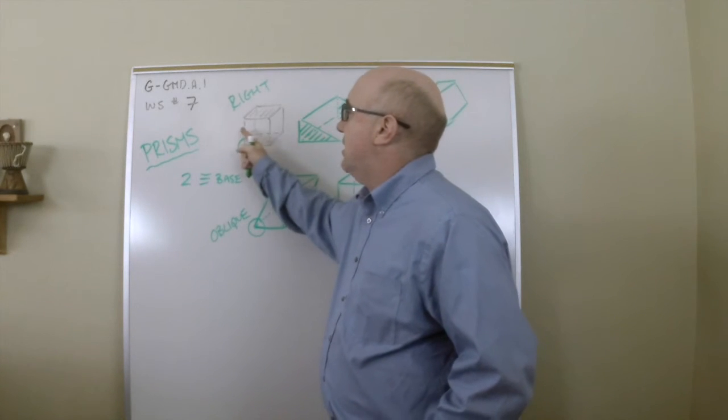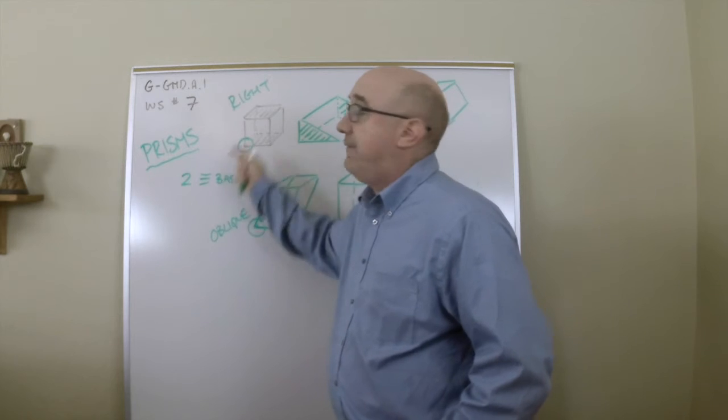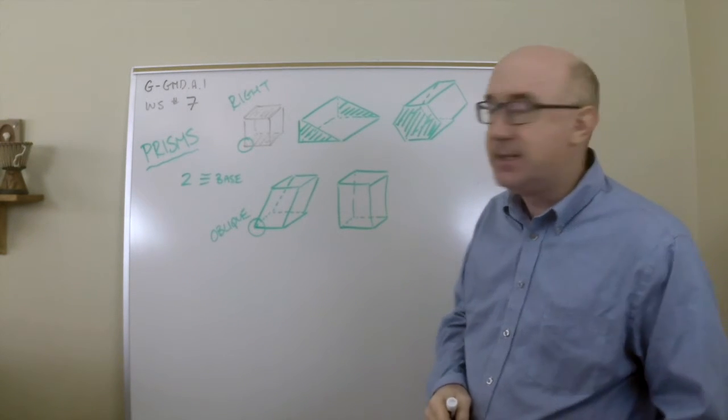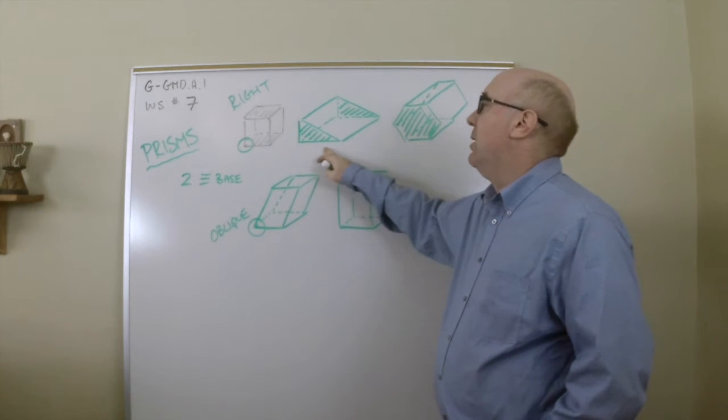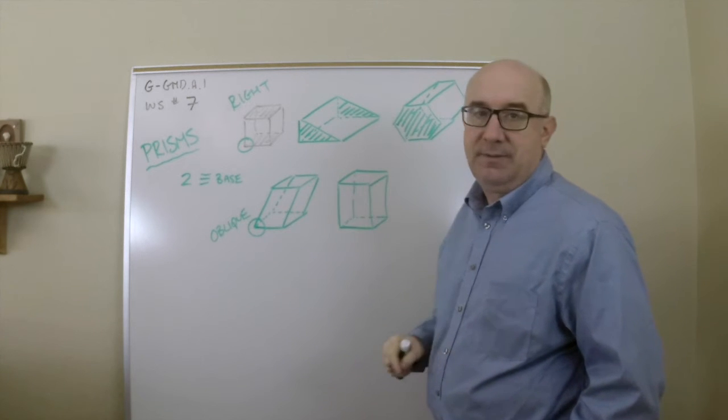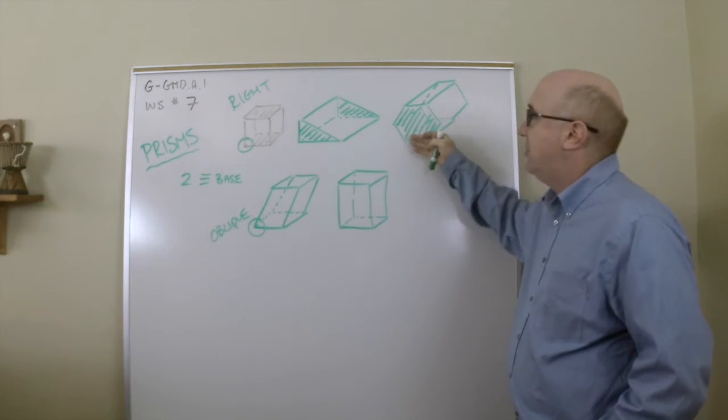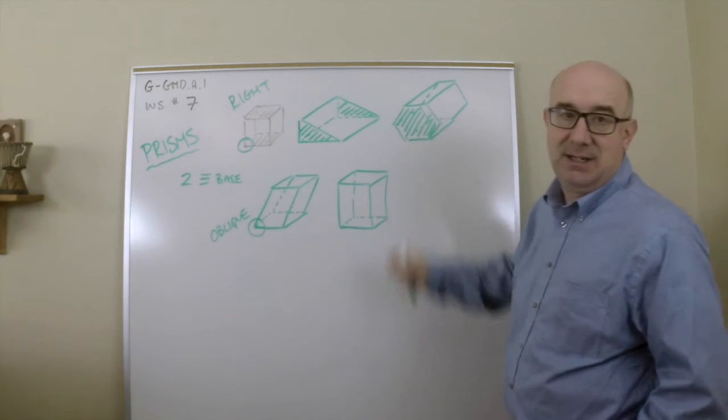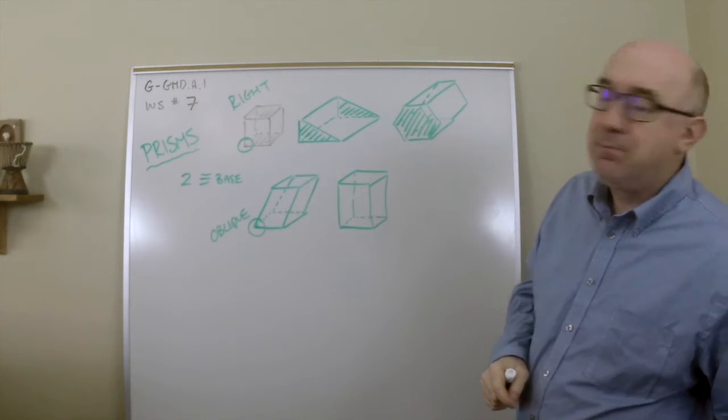Another characteristic or terminology is that if these are the bases, the other four faces in this case are all called lateral faces. Here you have two identical bases and three lateral faces. Here you'd have two identical hexagonal bases and six lateral faces.